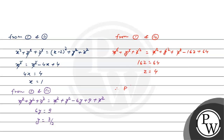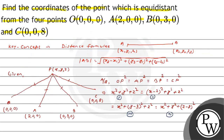Therefore, the point P is (x, y, z) = (1, 3/2, 4), from which the distances to O, A, B, and C are all equal. Hope you understand it well. Best of luck.